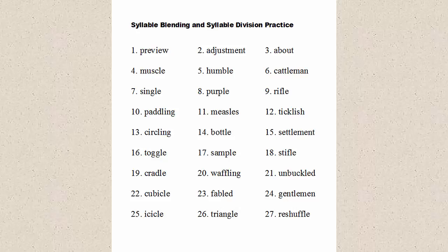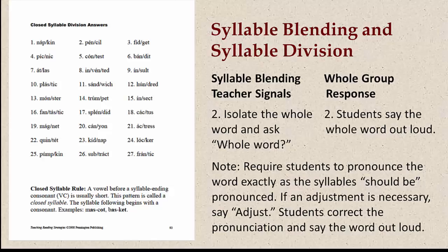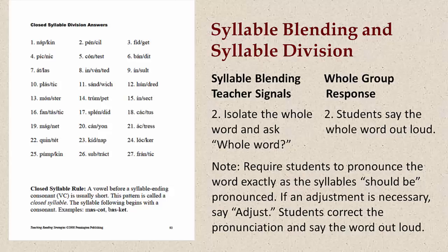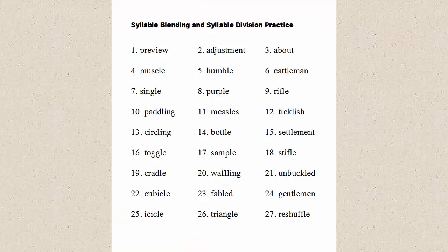Follow these directions to teach the syllable blending and syllable division activities. Number one: isolate each syllable on the display — students say each isolated syllable. Number two: isolate the whole word and ask 'whole word?' — students say the whole word out loud. Require students to pronounce the word exactly as the syllables should be pronounced; if an adjustment is necessary, say 'adjust,' and students respond by correcting their pronunciation. Number three: say 'snap and clap' — students snap on the unaccented syllables and clap on the primary accented syllable while saying the word out loud.